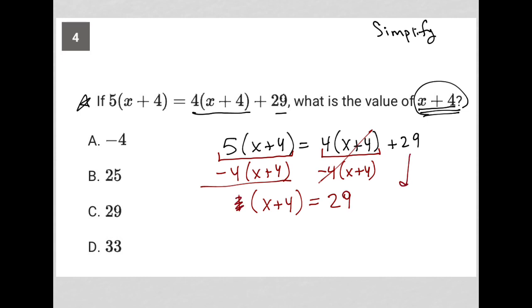Of course, there's no need for the 1. So really, this is just saying that x plus 4 is equal to 29. And therefore, our correct answer is choice C.